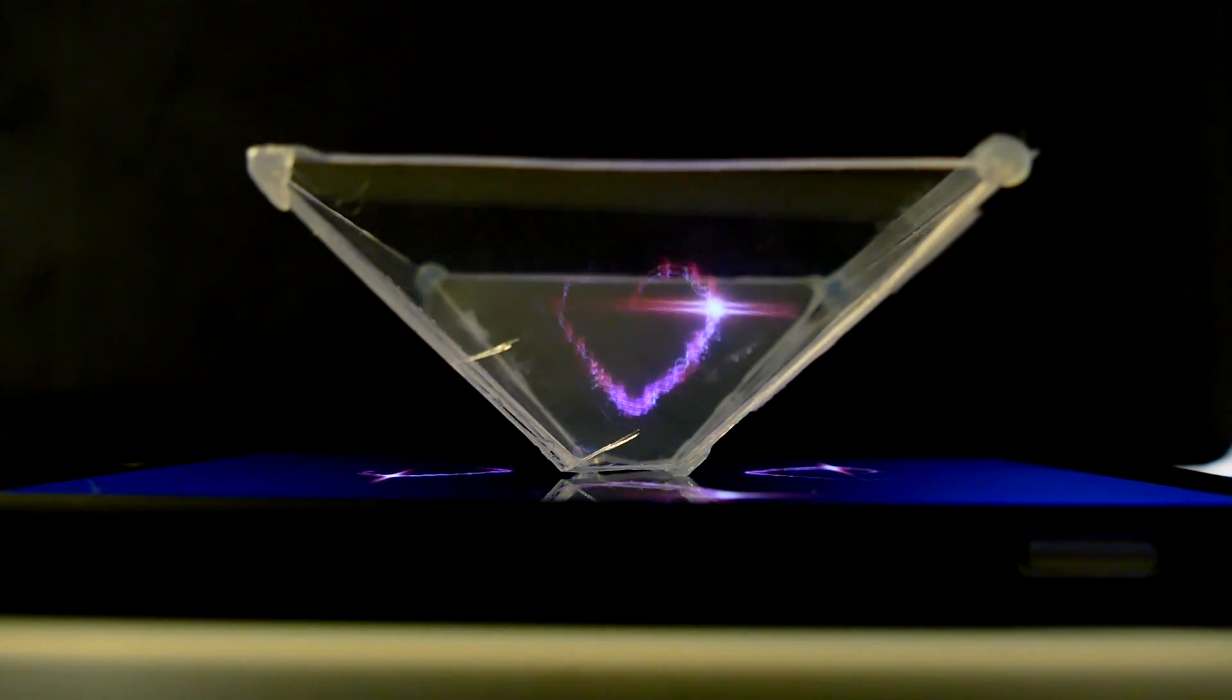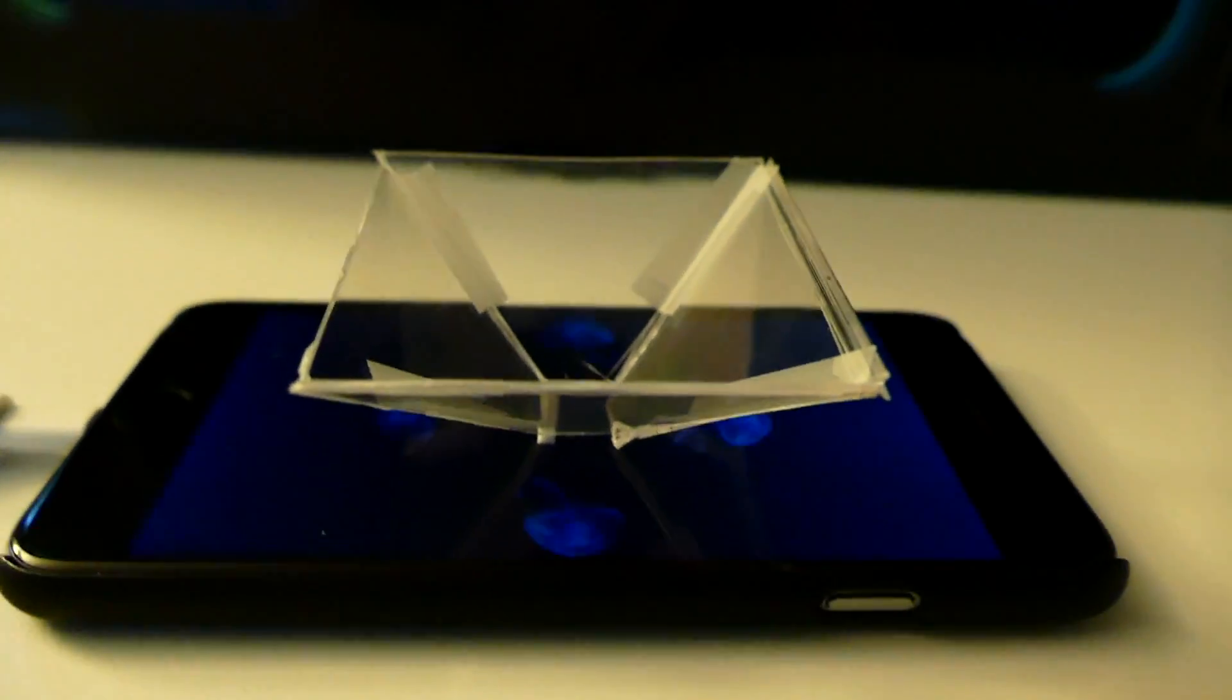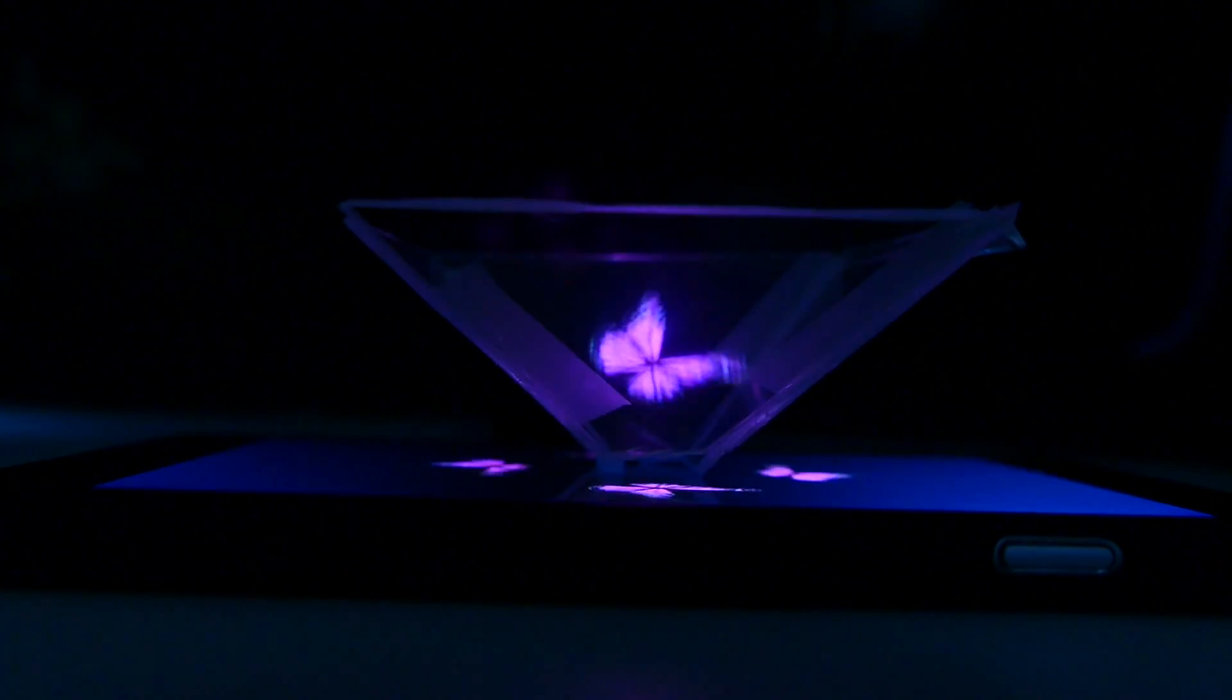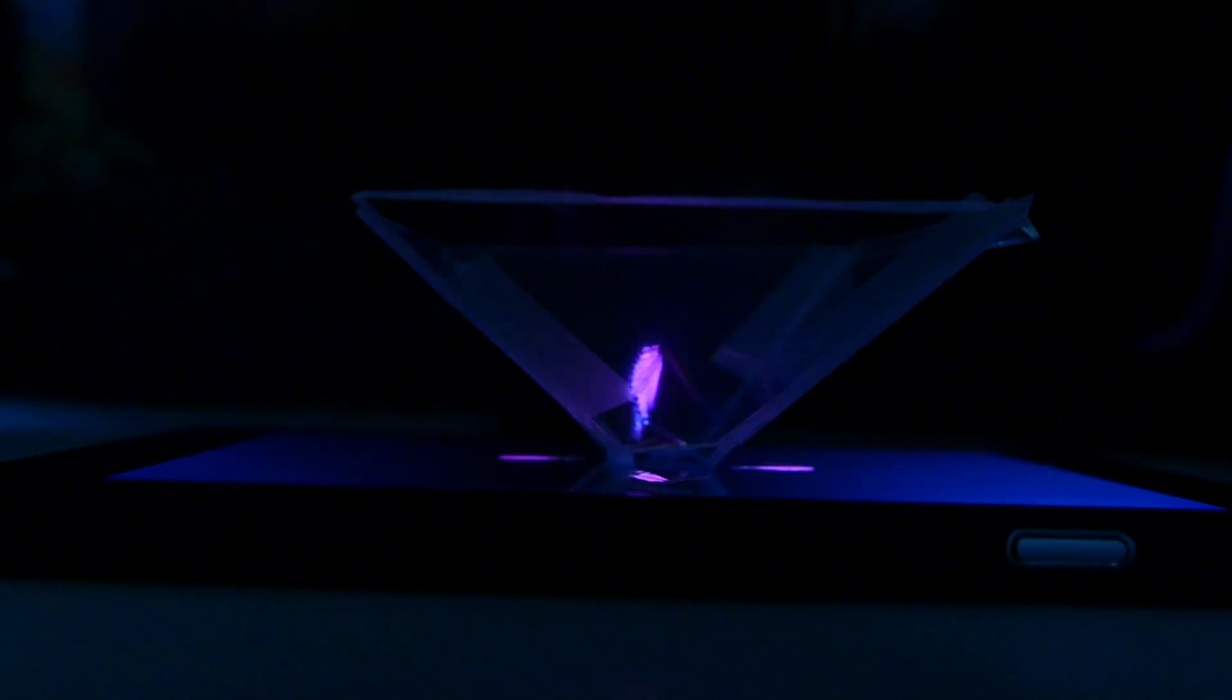Now this obviously isn't a real 3D hologram that you could touch. It is just a reflection off all the surfaces of the pyramid from your phone. It reflects all four sides, making one 2D image in the middle that appears to be 3D.